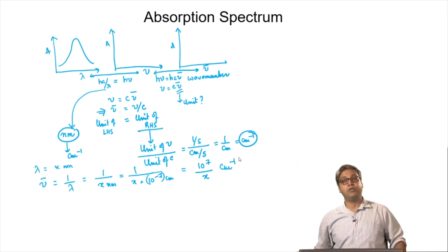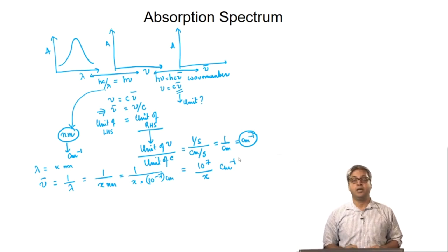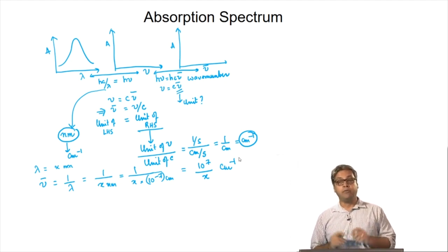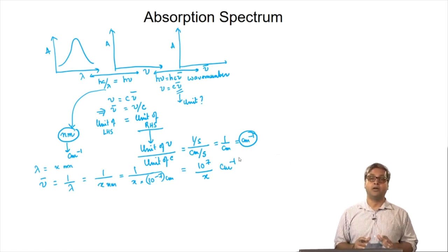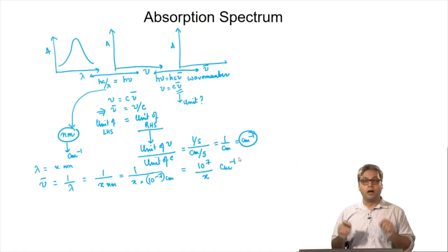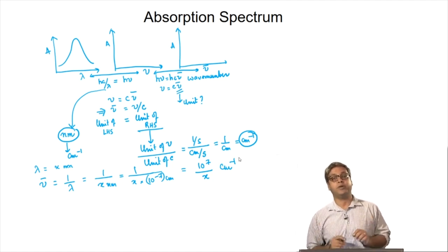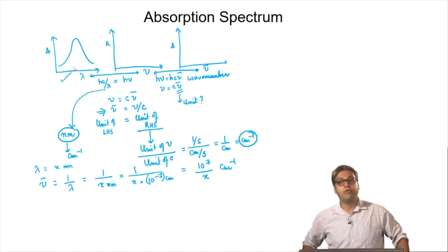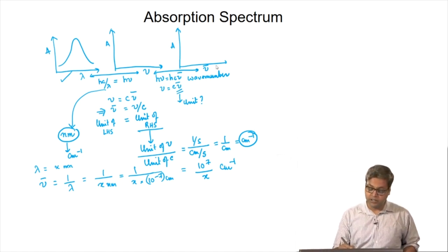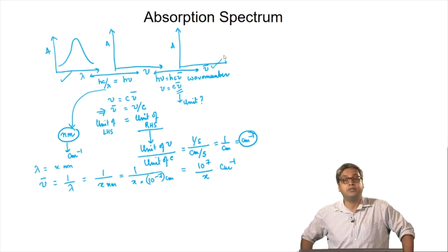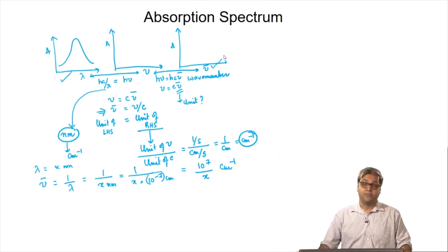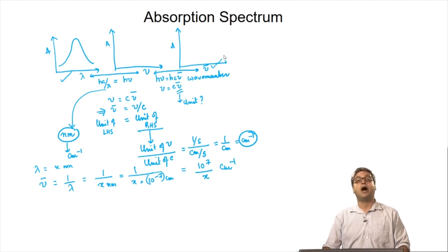We will later discuss different forms of spectroscopy like UV-visible, infrared, and microwave spectroscopy, and we will see that we get different spectroscopy depending on the wavelength or frequency of light interacting with the matter. Conventionally, when we plot an infrared spectrum, we plot wave numbers on the x-axis. This is just a convention used for convenience so that the values on the x-axis are not very large numbers.